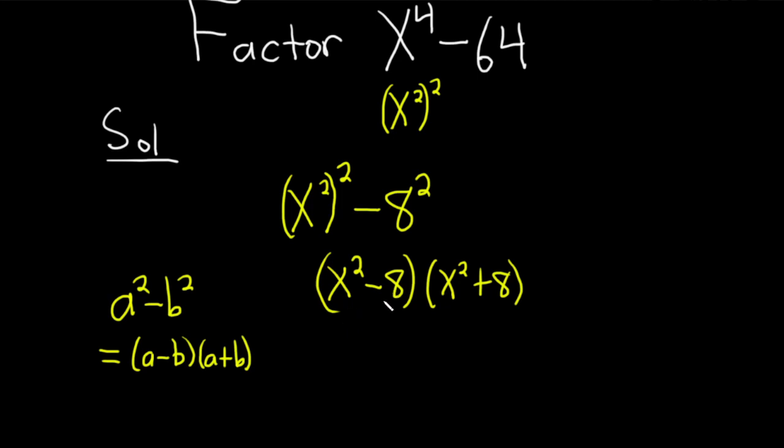x squared minus 8 can be factored even further because you can think of 8 as the square root of 8 squared. So this is actually x squared minus the square root of 8 squared, times x squared plus 8.